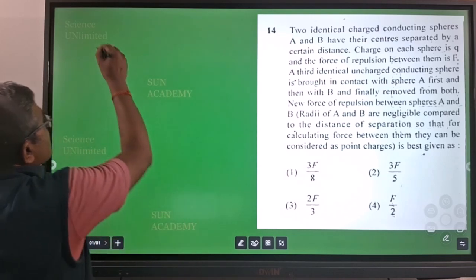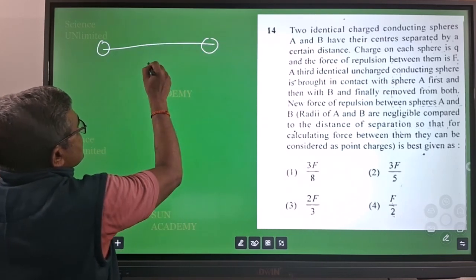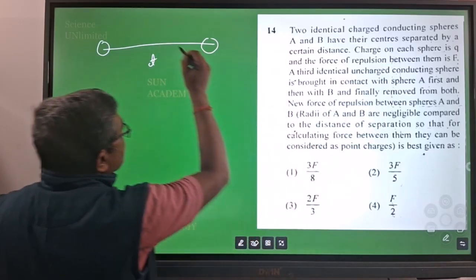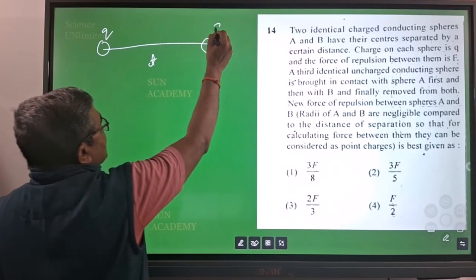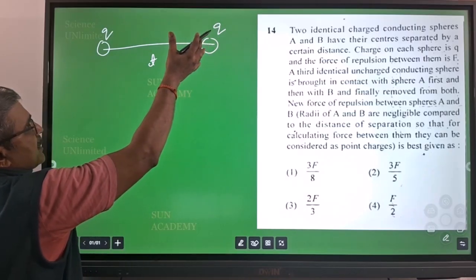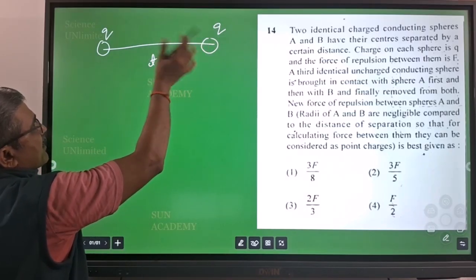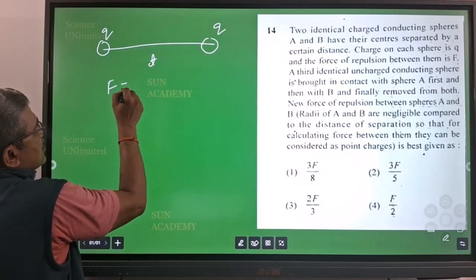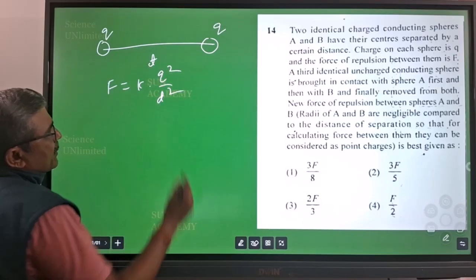Here two spheres are there which are identical and separated by some distance d. They are saying about repulsion force. Repulsion force means both are having same charge, either positive or negative, both are having same polarity. So you will have repulsion force only. So your f is equal to k into q square by d square.